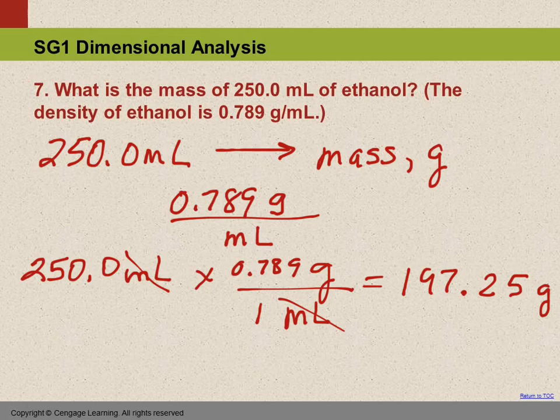That's the number that the calculator gives us. And then we have to think significant figures. Okay, how many significant figures in 250.0? Okay, we have trailing zeroes. Those are the ones that mess us up. There's a decimal point in the number that makes all the trailing zeroes significant. If there's no decimal point, none of the trailing zeroes are significant.